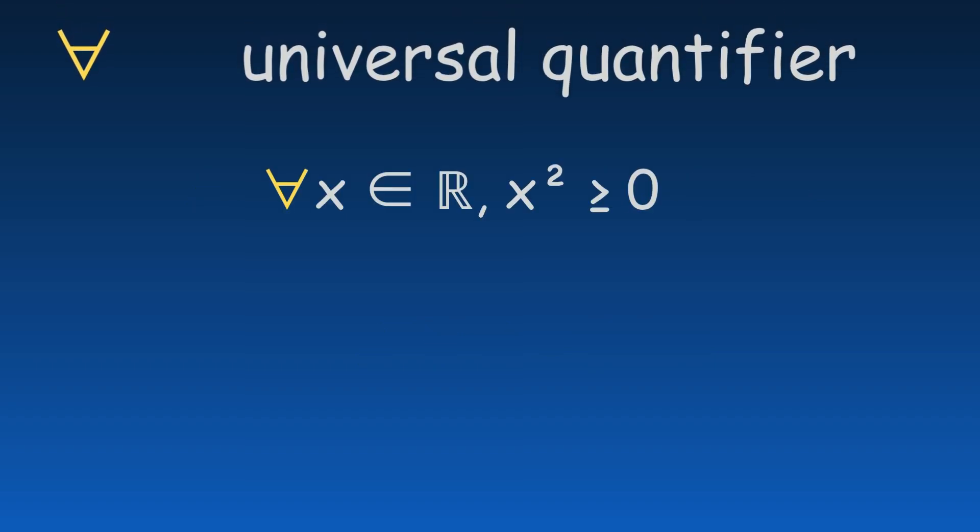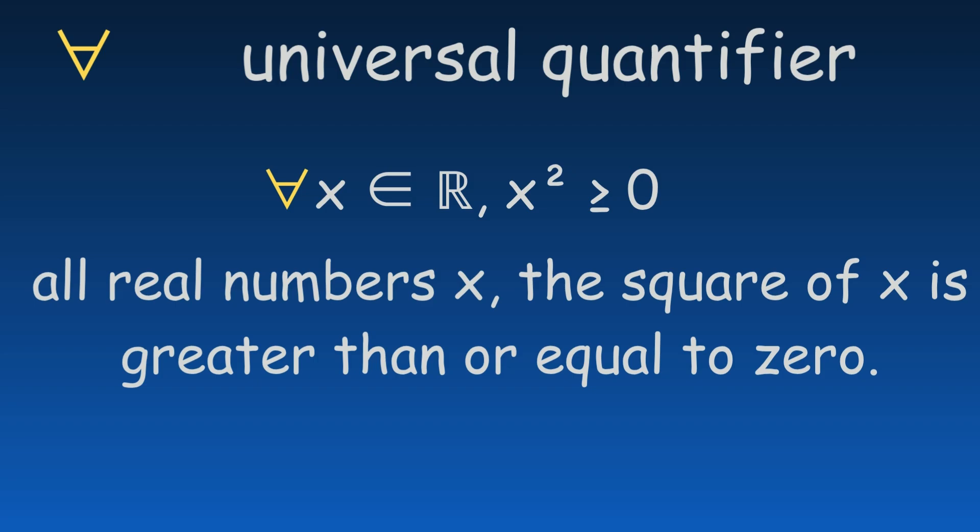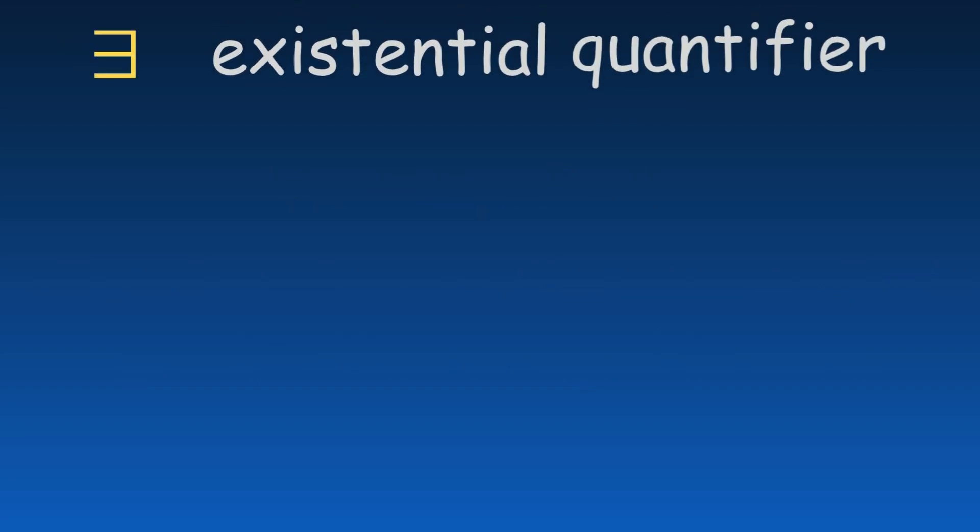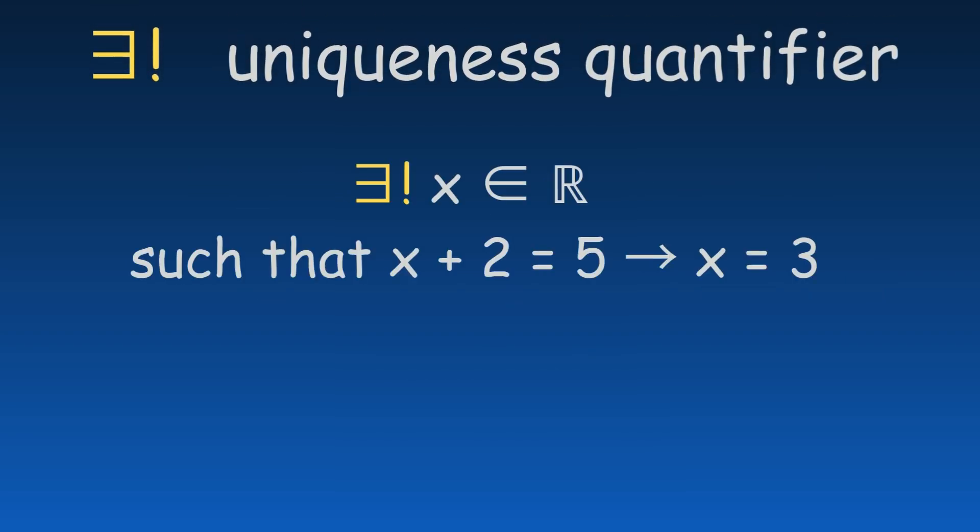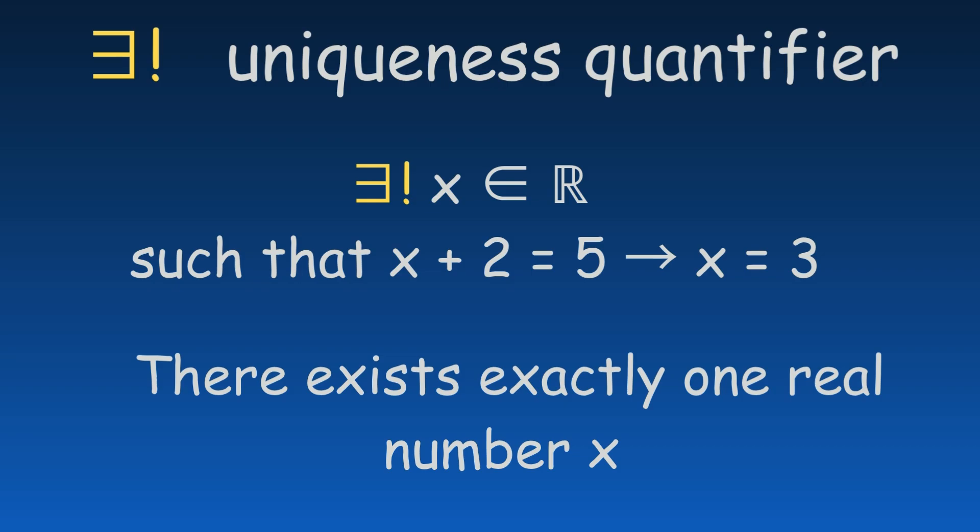The universal quantifier is used to say that a statement is true for all elements in a given domain. The existential quantifier says that there is at least one element for which the statement is true. The uniqueness quantifier goes a step further. It says there is exactly one element in the domain for which the statement holds true.